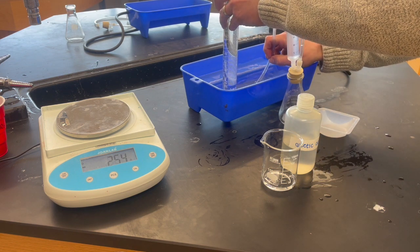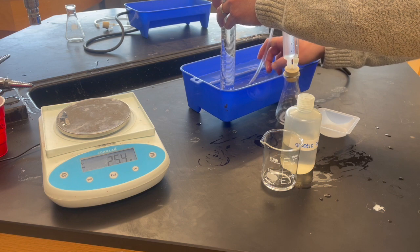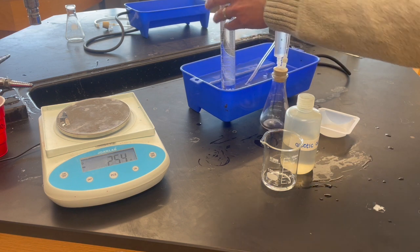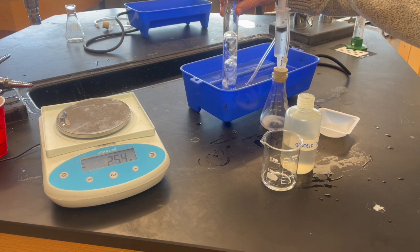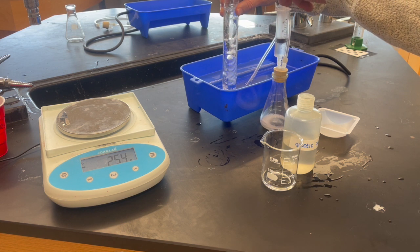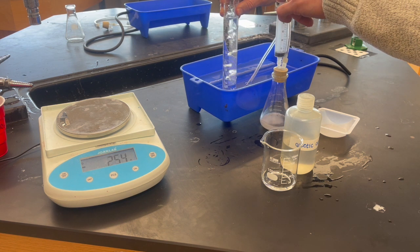As you can see here, I thread the end of the rubber tubing down under the level of the water and under the graduated cylinder. Now I'm going to press down gently on the syringe to transfer the vinegar and baking soda together.